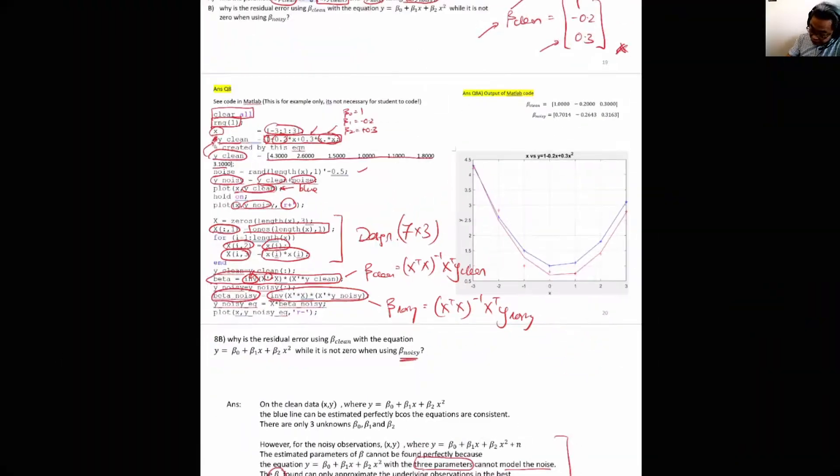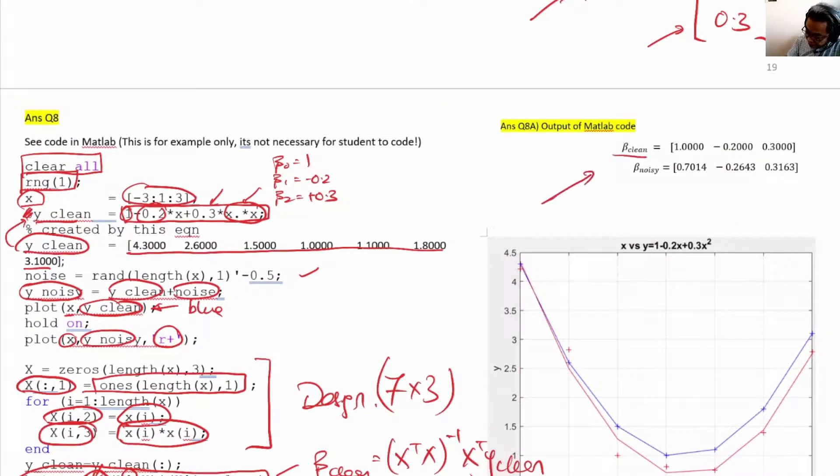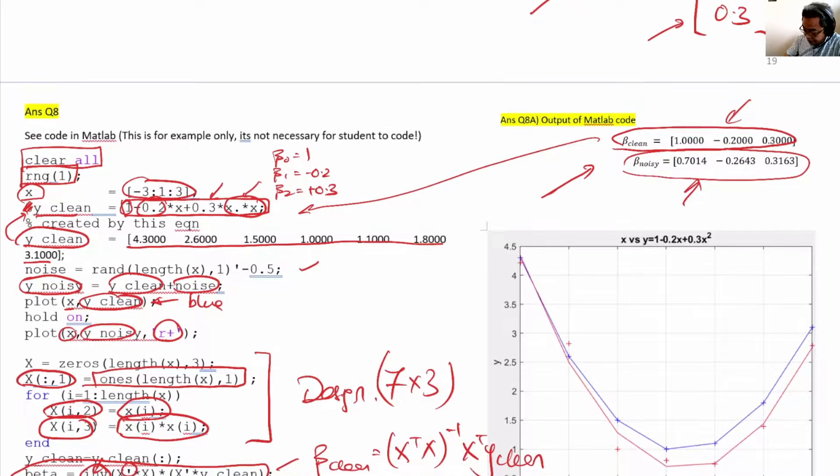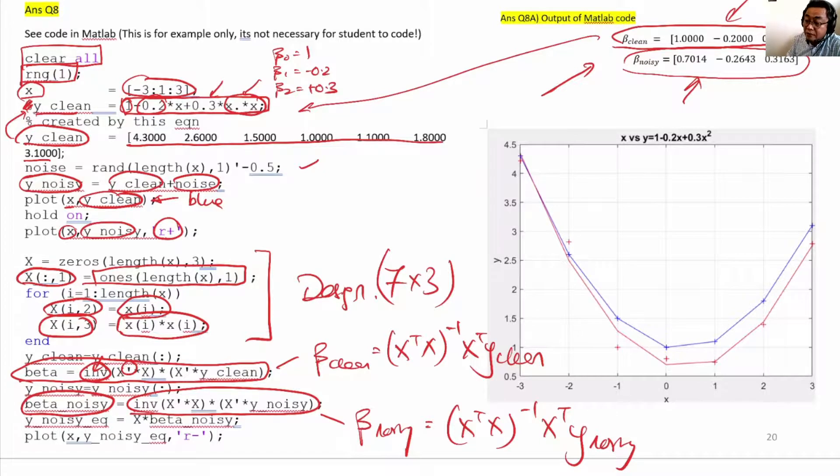The final x and β are here. β_clean is exactly as what we have put into this equation. β_noisy is different from β_clean because, well, it's actually solving a different curve, and the curve doesn't exactly match the crosses of the noisy data.